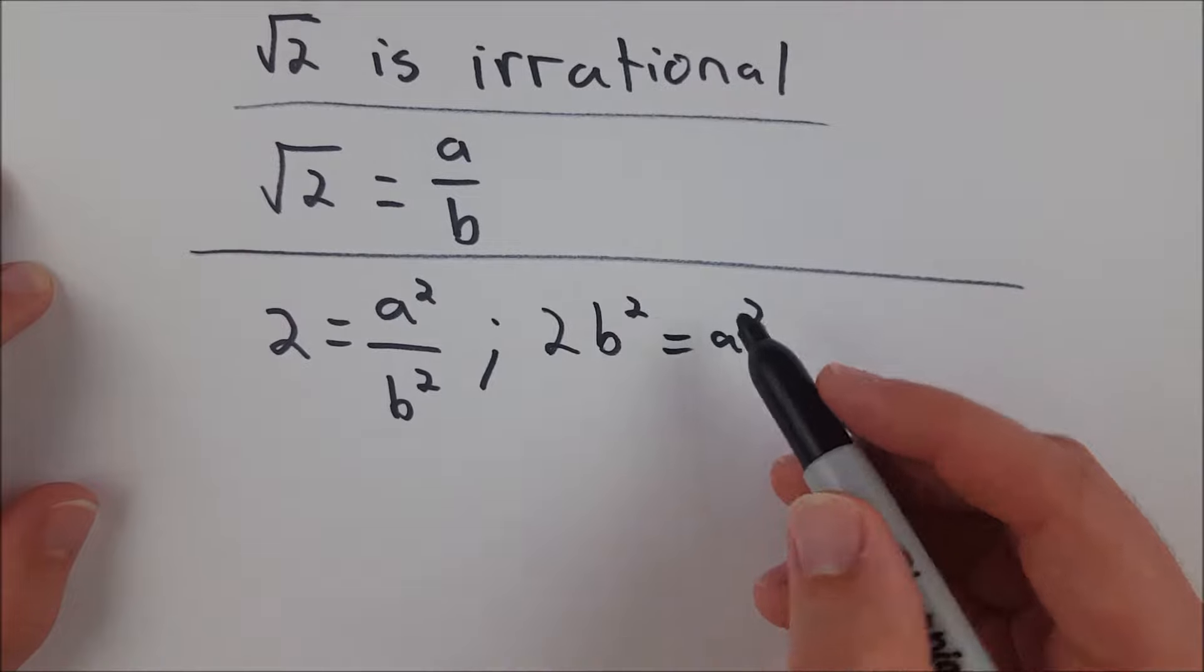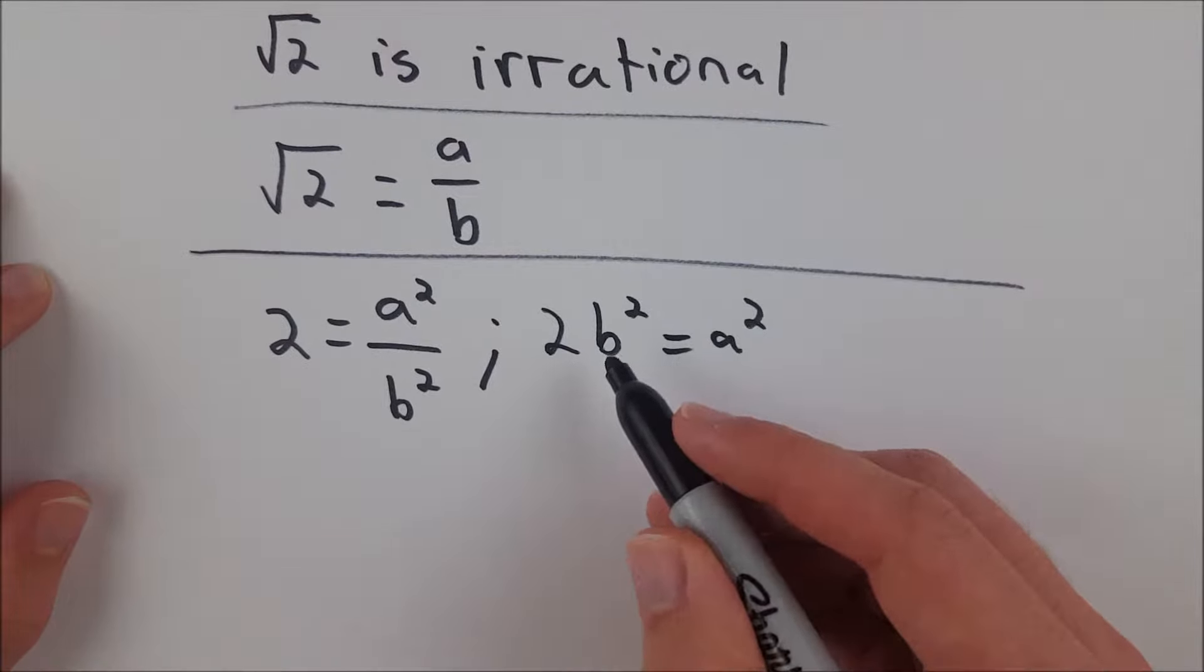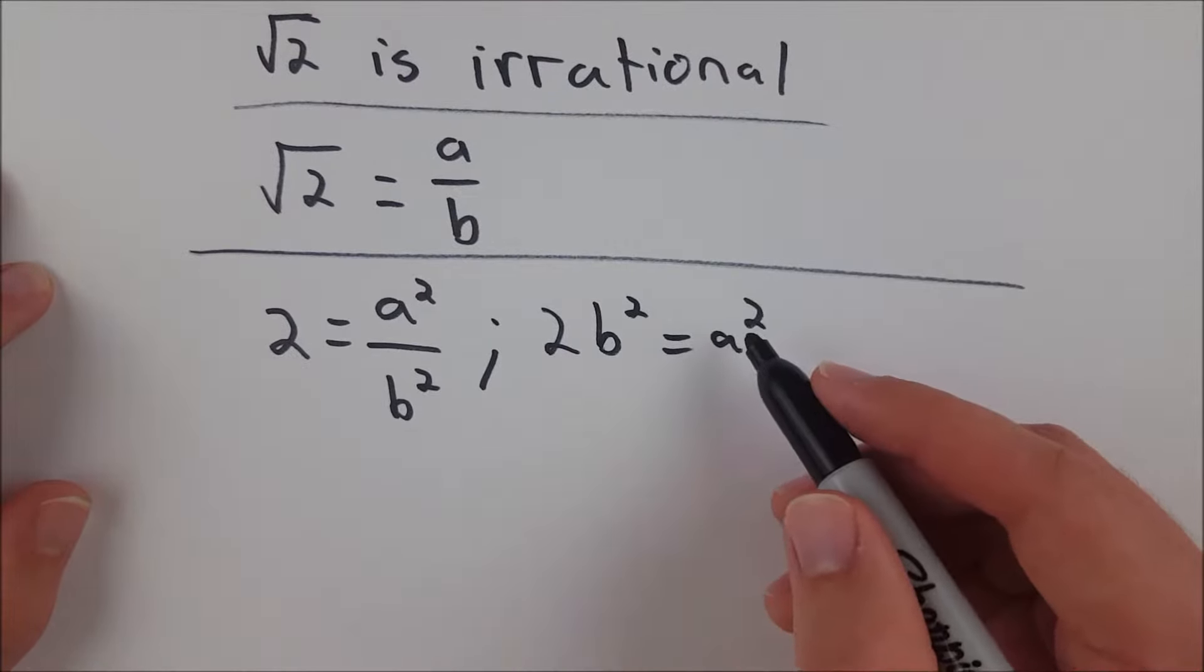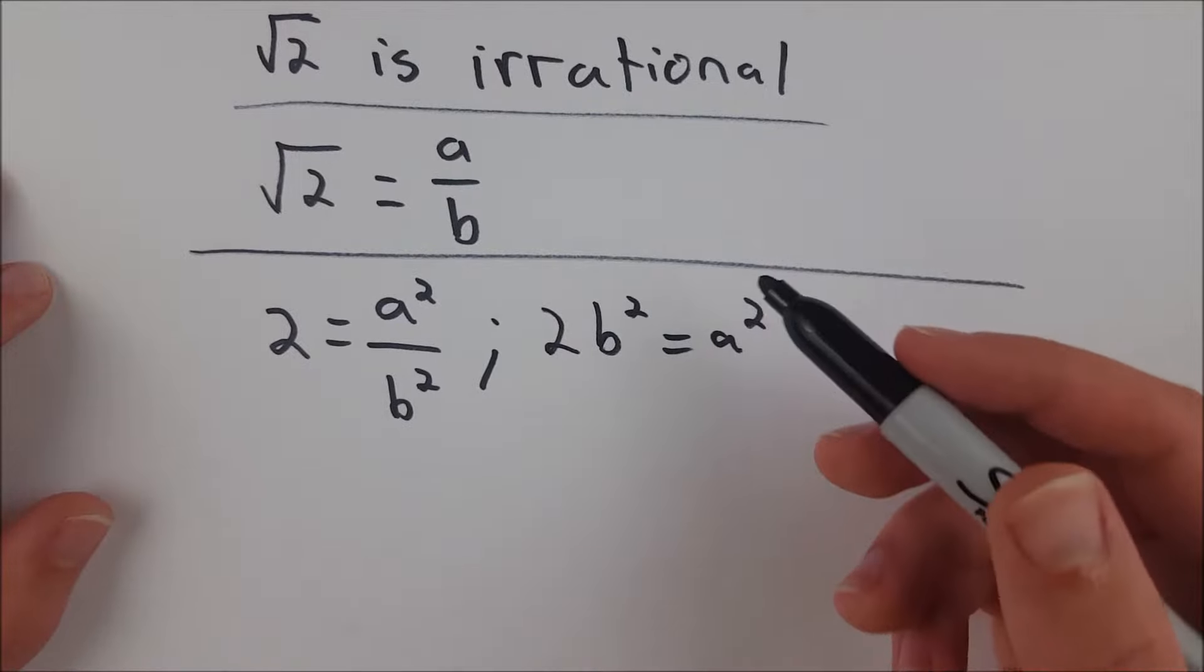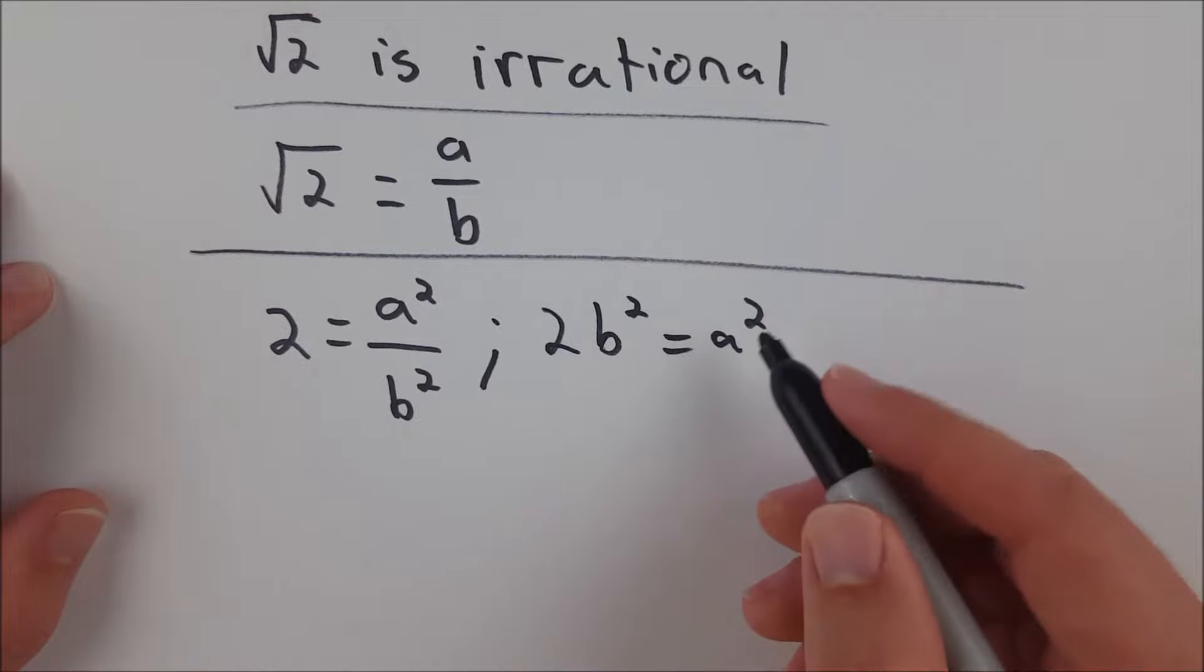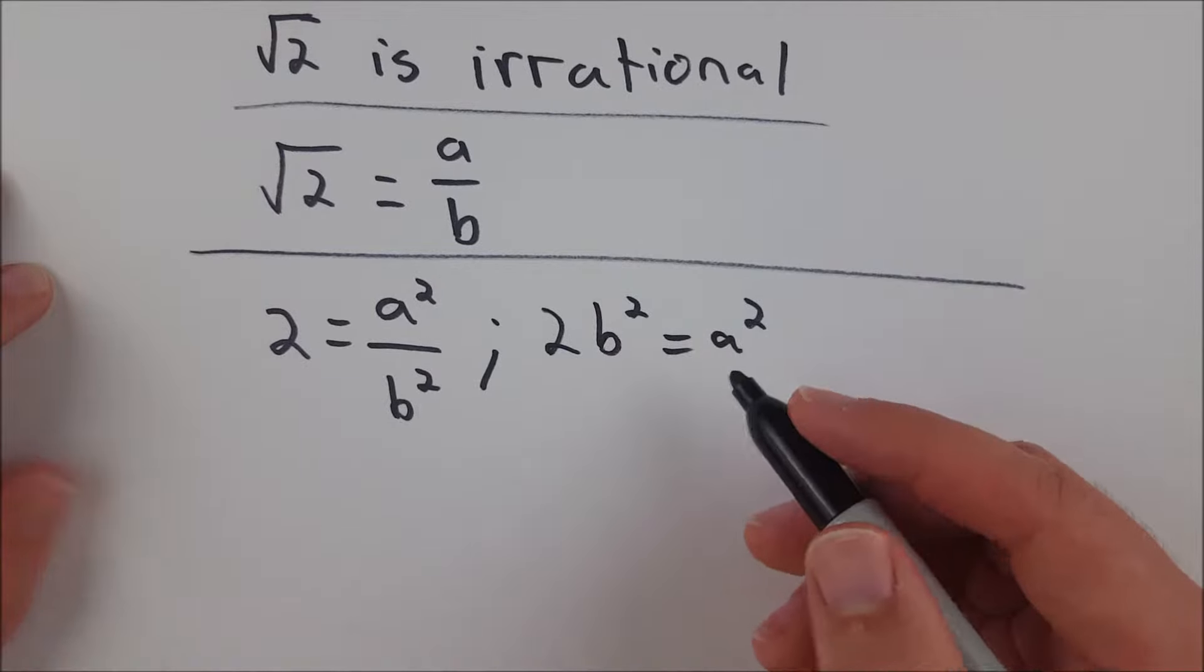Therefore, since a squared is equal to 2 times some integer, we know a squared has to be even. And since odd numbers squared are odd and even numbers squared are even, we know that a has to be an even number.